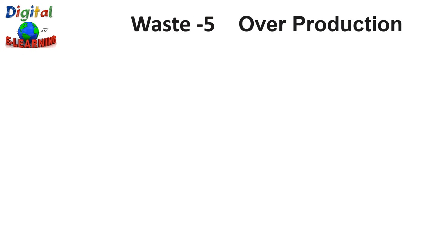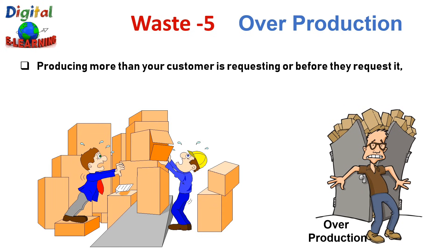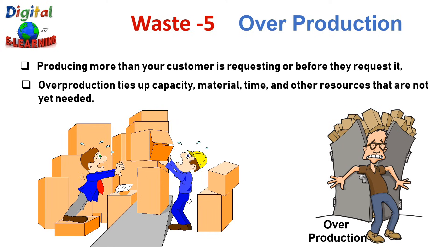The fifth category of waste is Overproduction — producing more than your customer is requesting, or before they request it. This means exceeding customer demand, which leads to additional costs. Overproduction actually triggers the other six categories of waste, because with excessive products or tasks, additional transportation, excessive motion, and greater waiting time are required. If a defect appears during overproduction, your team has to work more to rebuild units. Overproduction ties up capacity, material, time, and other resources that are not needed.